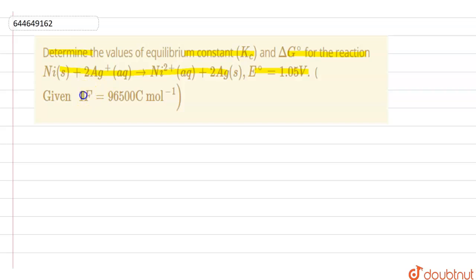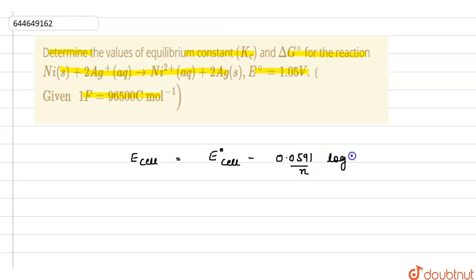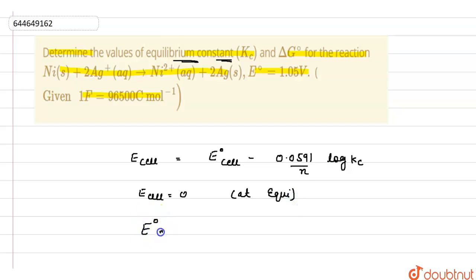The given e° (E naught) value is 1.05 and Faraday is 96500. The formula is: E_cell = E°_cell minus 0.0591 upon n log of Kc. Whenever we talk about the equilibrium constant, at equilibrium the value of E_cell equals zero. That's why E°_cell becomes equals to 0.0591 upon n, where n is the number of electrons, multiplied by log Kc.